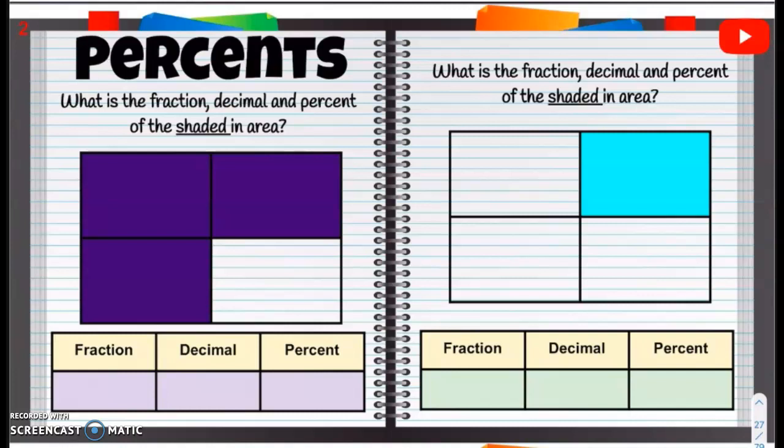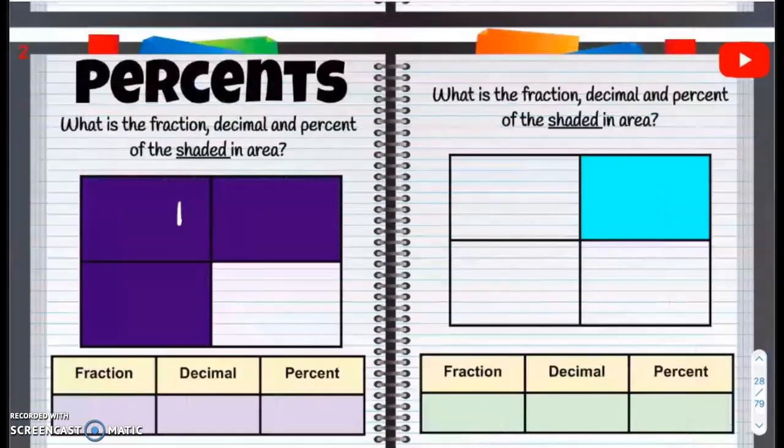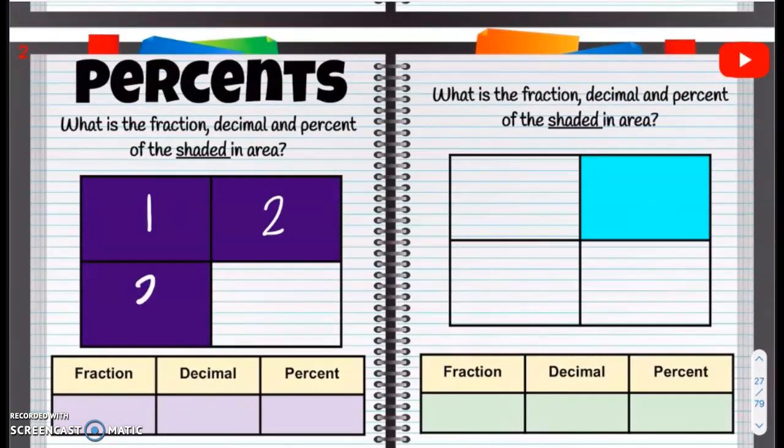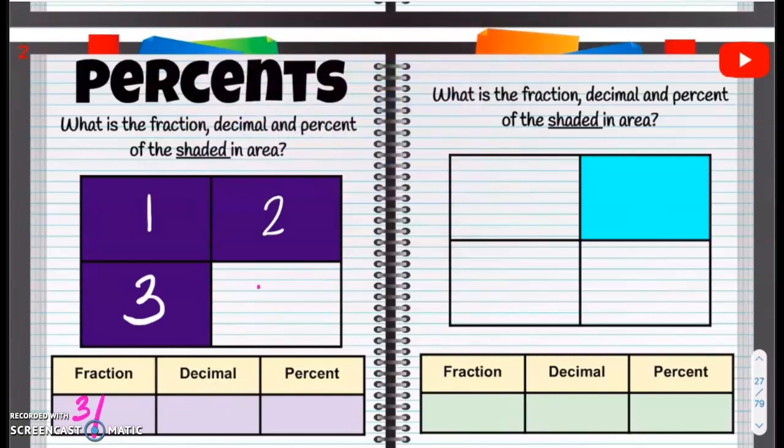So we're going to take a look and see what is shaded in. We have one shaded, two, three. So we have three total shaded out of four. Three out of four.